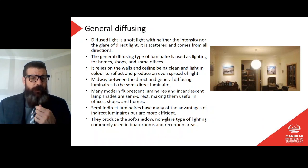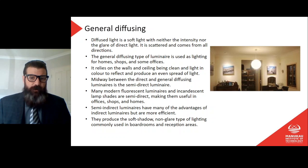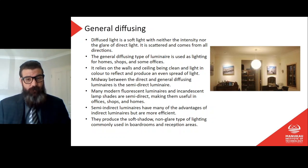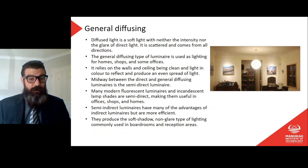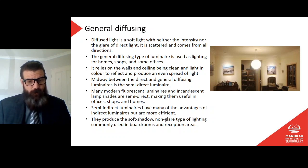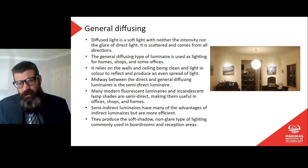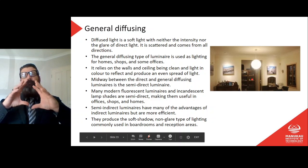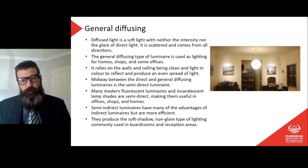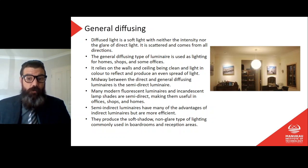General diffusing: diffused light is a soft light with neither the intensity nor the glare of direct light — it is scattered and comes from all directions. General diffusing luminaires are used in homes, shops, and some offices, and rely on walls and ceilings being clean and light in color to reflect and produce an even spread of light. Midway between direct and general diffusing are the semi-direct luminaires. Semi-indirect luminaires have many advantages of indirect but are more efficient, producing soft shadow, non-glare lighting commonly used in boardrooms and reception areas.